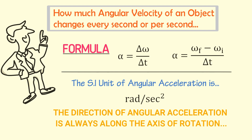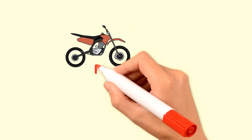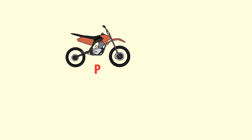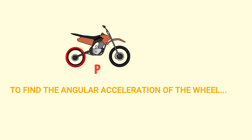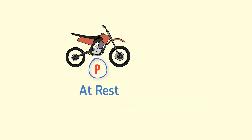The direction of angular acceleration depends upon the change in angular velocity, and it is always along the axis of rotation. Now, to calculate angular acceleration, let's consider a bike. I am interested in finding the angular acceleration of the wheel of this bike. Initially, the bike is at rest at point P, so the wheel is not rotating.